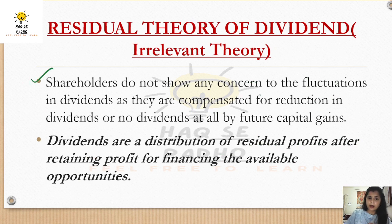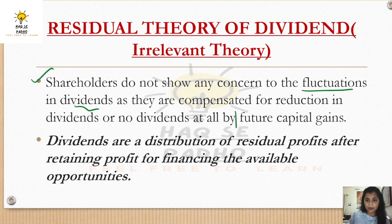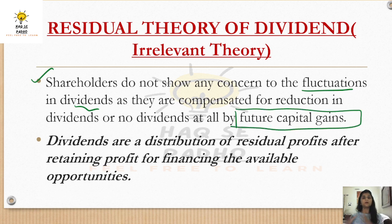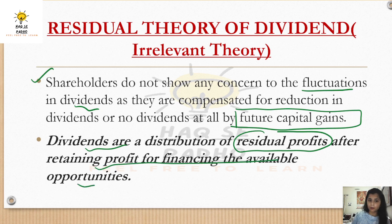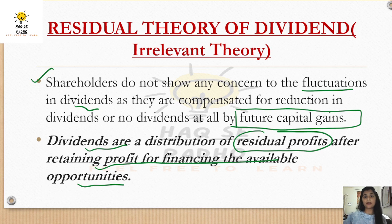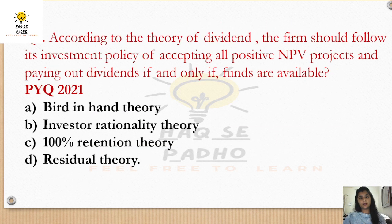Shareholders don't have any concern when there is a fluctuation in the dividend. They don't complain because they know that if dividends are not paid now, future capital gains will come as profits grow. That's why shareholders don't worry when dividend values fluctuate. Dividends are a distribution of residual profit — meaning the profit that is left over after retaining earnings to finance available investment opportunities. After financing all opportunities, if there is still residual profit, that is given to shareholders.